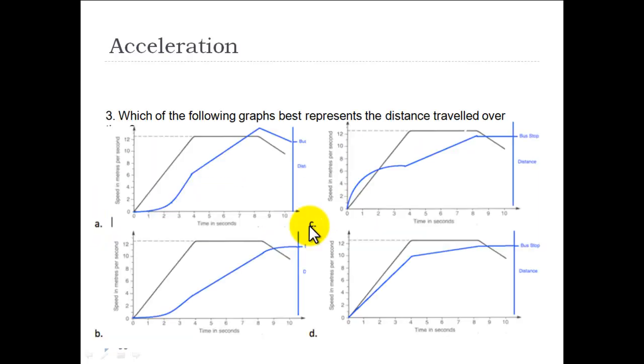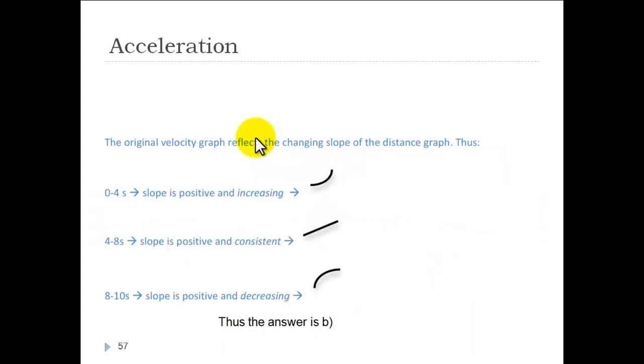From 4 to 8 seconds, from here to here, the acceleration remains the same. If you are doing a distance versus time graph, he would be getting the same distance away from home every second. It's a positive slope and the slope is staying the same. Now, the tricky part is 8 to 10 seconds. The slope is positive, so it's in this direction, but the slope here is decreasing. So, the line is getting flatter.